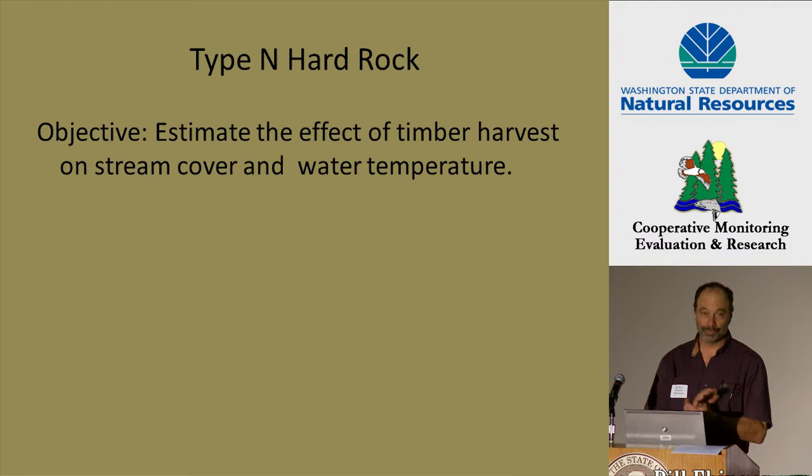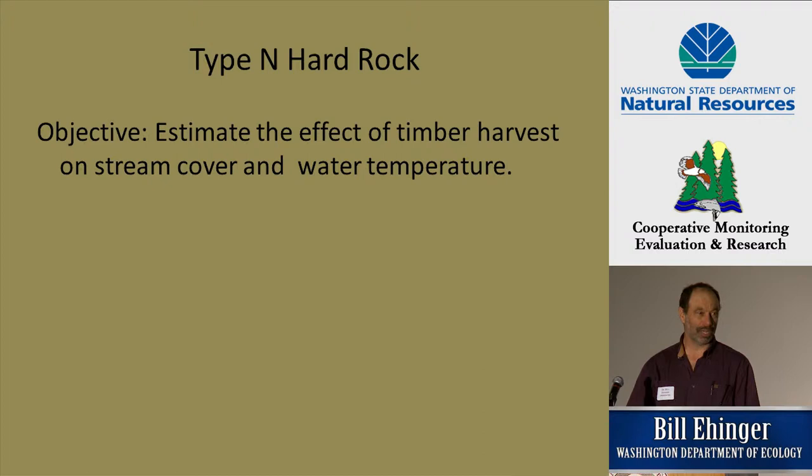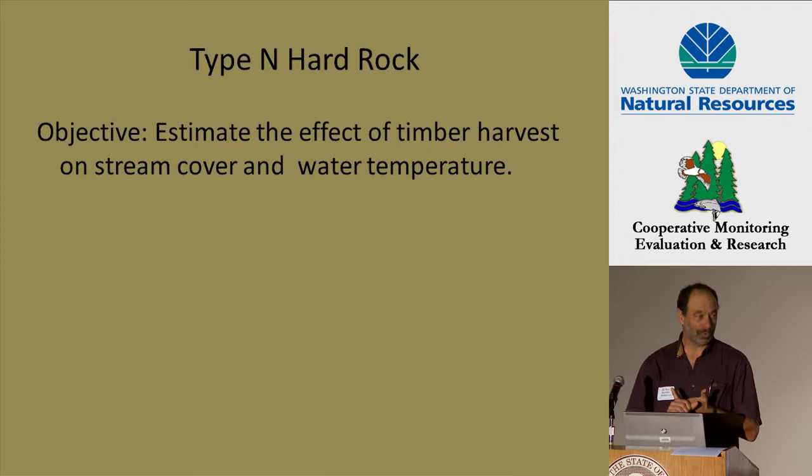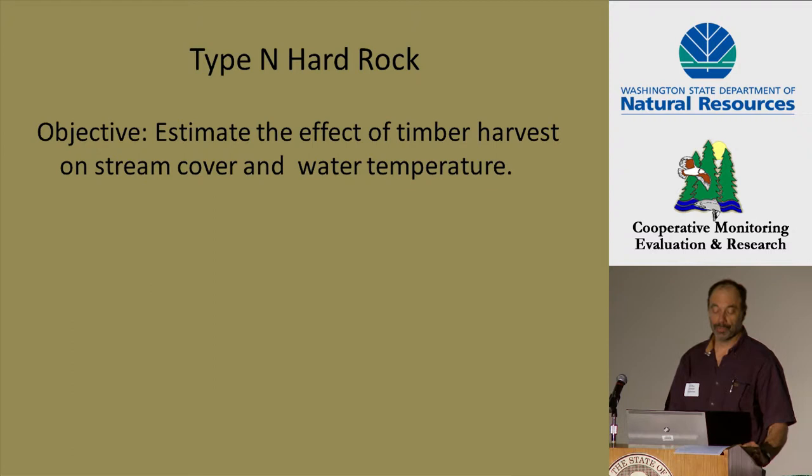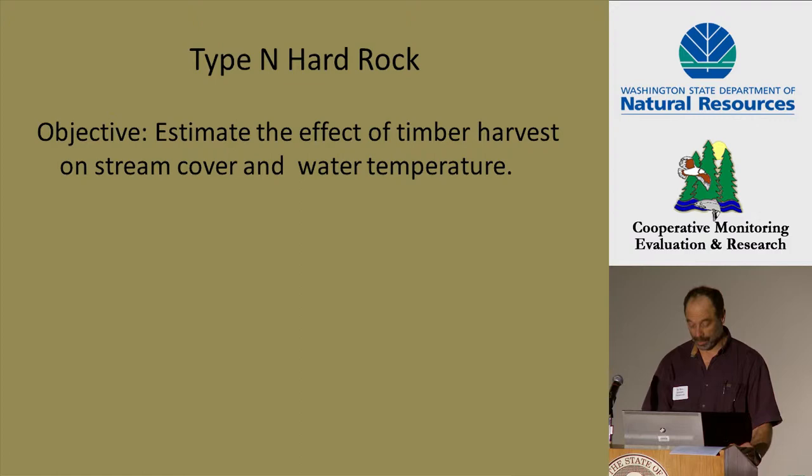There have been a lot of studies looking at stream temperature and effects of forest practices on stream temperature. This one is really looking at headwater streams — from the uppermost point of perennial flow down to the last fish point — and also a unique set of riparian buffer strategies. Our overall objective is to estimate the effect of timber harvest using three different buffer strategies on stream cover and water temperature.